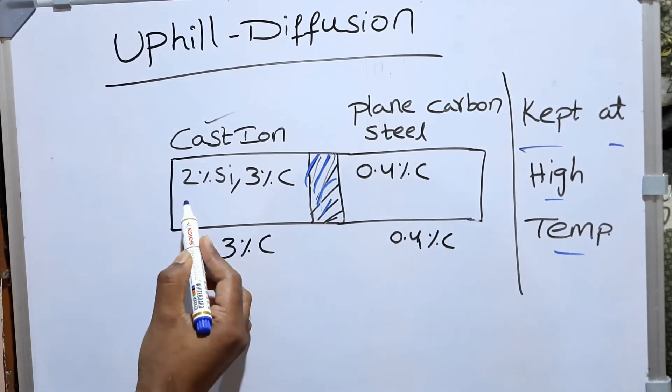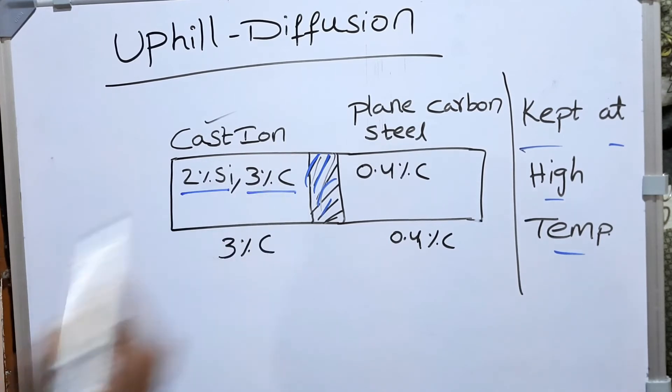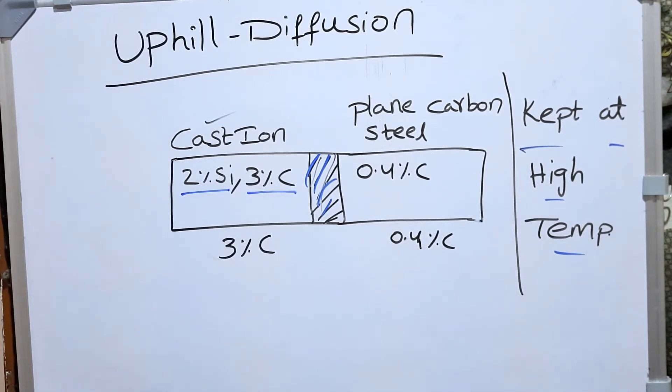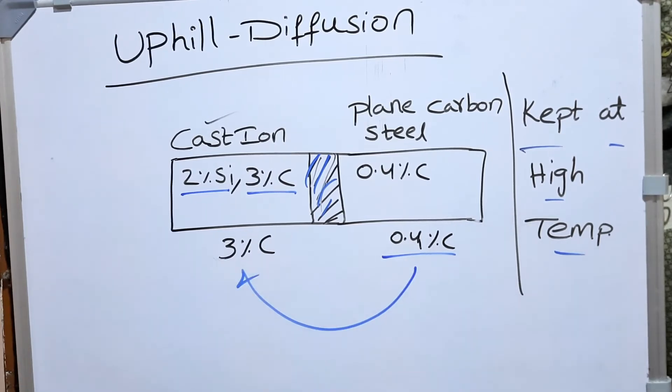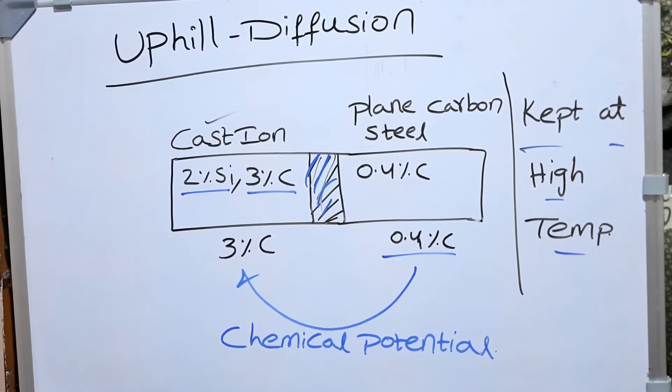Because here 2% silicon locks the carbon percentage and makes the activity of carbon so low, which is even lower than 0.4% carbon. So here the diffusion is taking place because of the difference in chemical potential.